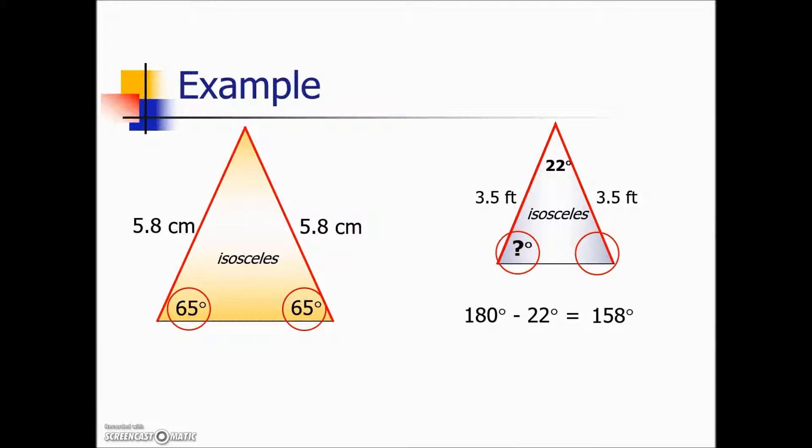Because of our isosceles triangle, these base angles are equal. We will divide the result by 2 to give us the measurement of each of those base angles, which turns out to be 79 degrees.